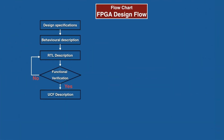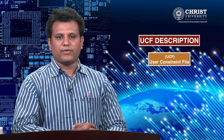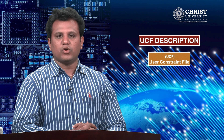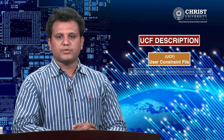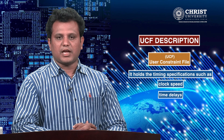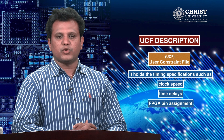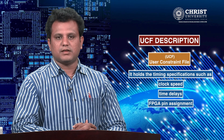The fifth stage in the flow chart of FPGA design flow is UCF description. UCF stands for user constraint file, which holds the timing specifications — that is, clock speed, time delays — and FPGA pin assignment for input and output signals of the design.